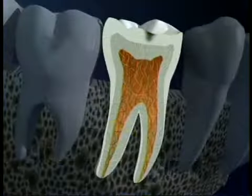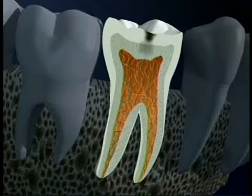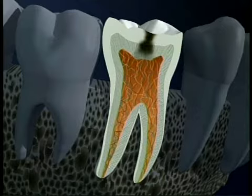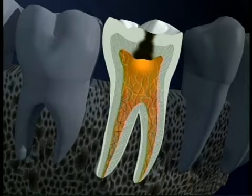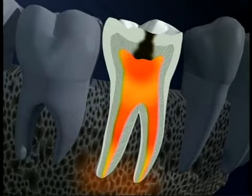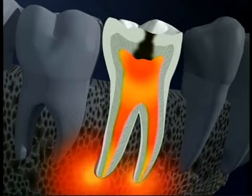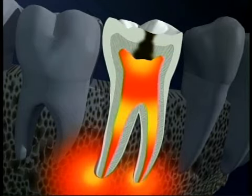It's far better to catch and restore cavities while they're still small and in the enamel layer of the tooth. Once they're in the softer dentin layer, they really grow quickly. If they make it to the pulp chamber, we have a whole new set of problems — root canals.